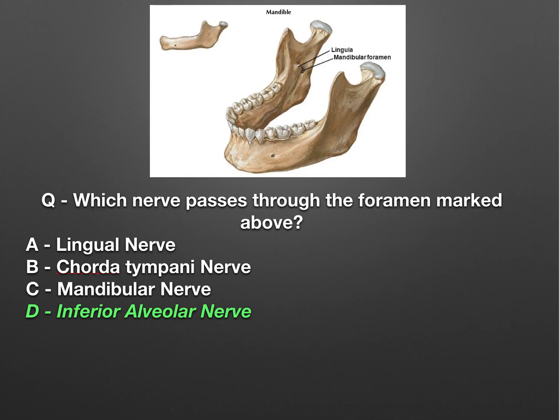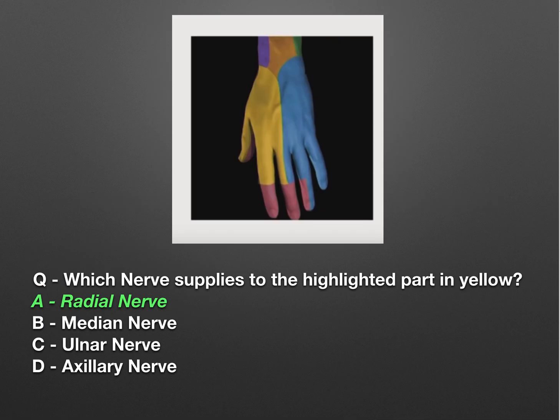The first question asks which nerve passes through the foramen marked above — this is the mandibular foramen. The answer options were lingual nerve, chorda tympani nerve, mandibular nerve, and inferior alveolar nerve. It's a confusing question because mandibular nerve is also included as an option, but the answer is inferior alveolar nerve.